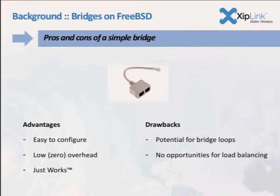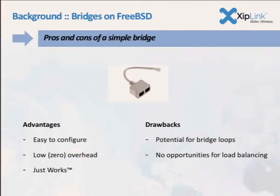The main use case of the FreeBSD Bridge is people who run wireless access points, with a router on one end and an access point on the other, wanting a single broadcast domain. That works really great, but the drawbacks are a high potential for bridge loops. Nothing prevents you from taking a cable and creating a loop, either by plugging one bridge into another on the same system or on a downstream system. There's also no opportunity for load balancing — all packets go out on all interfaces.